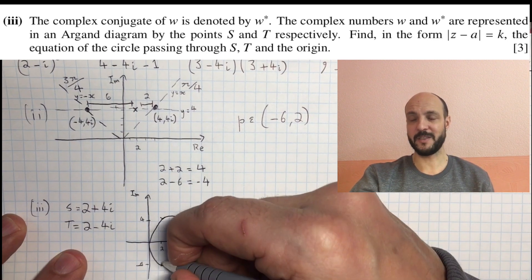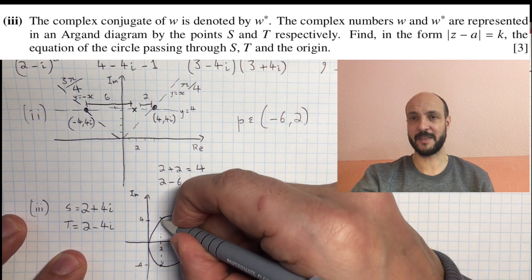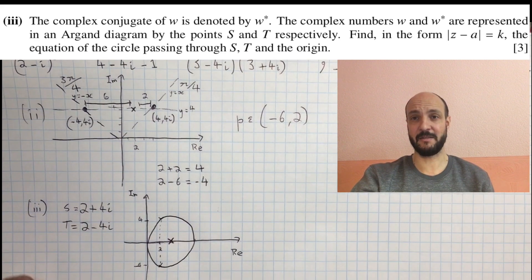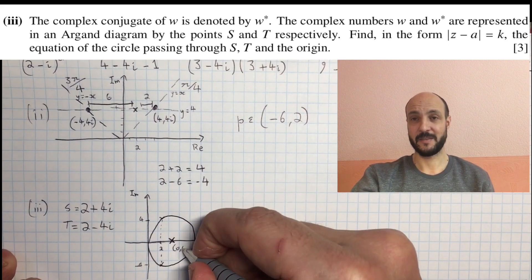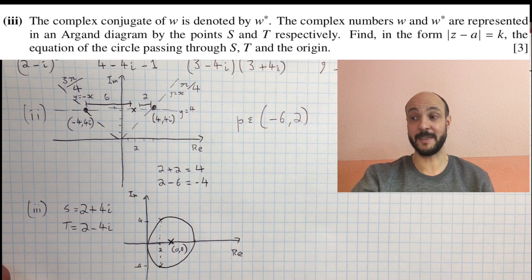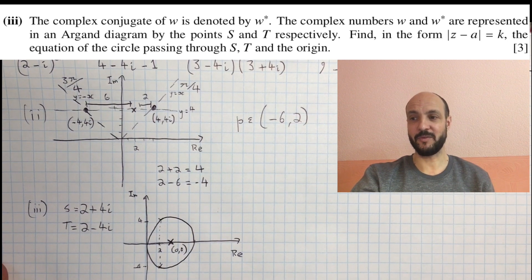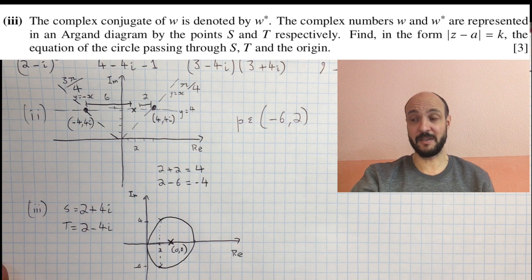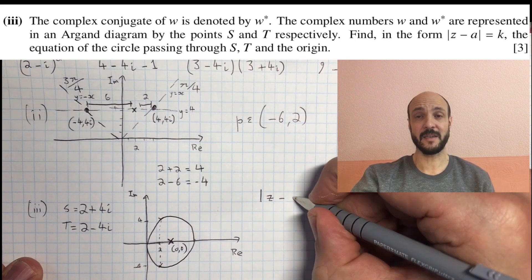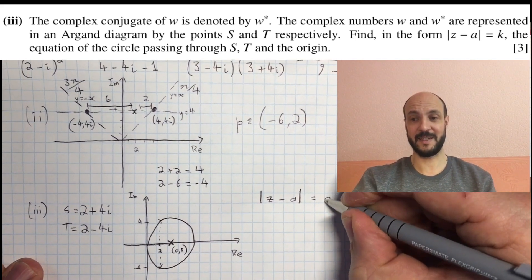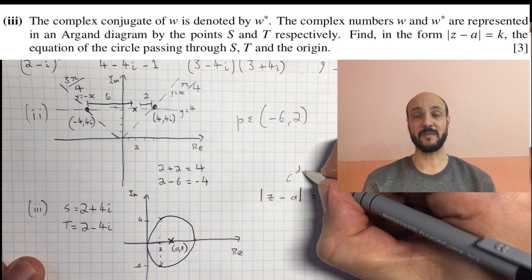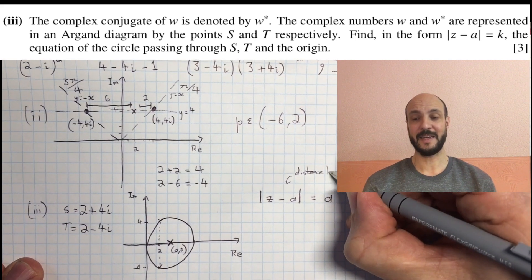And what we notice, because 4i and minus 4i are the same distance above and below the x-axis, the centre of the circle is necessarily going to be on the x-axis. So our a is going to be a real number, so we can think of it as a comma 0. So because our a is a real number, and because 0, 0 is on the circle, a is actually the radius of the circle. So this lets us rewrite our mod of z minus a equals k as mod of z minus a equals a, because we know a is actually our radius.